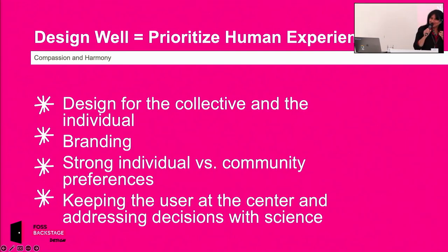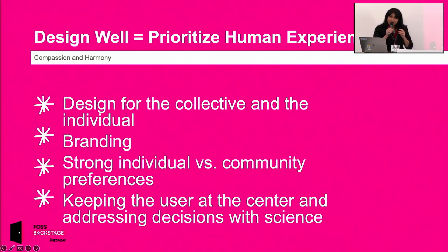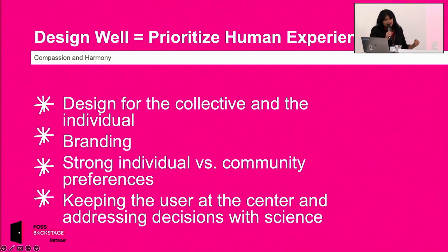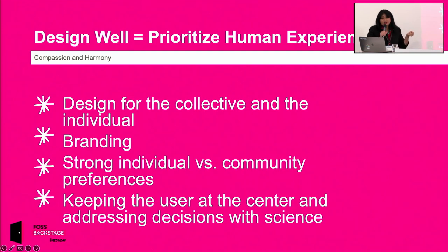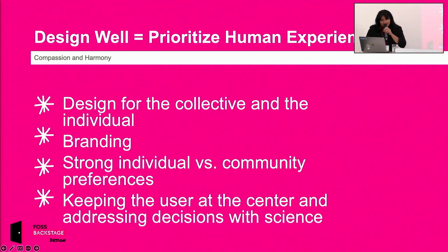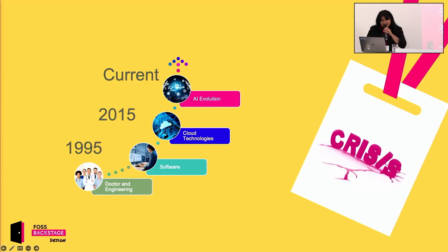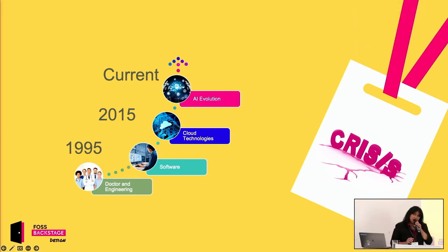When we think about designing well, it means prioritizing the human experience. We design for both the collective and the individual. We take into account different aspects of branding — strong individuals versus community preferences, especially when contributing to open source — and we keep the user at the center, addressing decisions with science. Those social changes I noted in 1995 seem to be a recurring theme throughout my career.